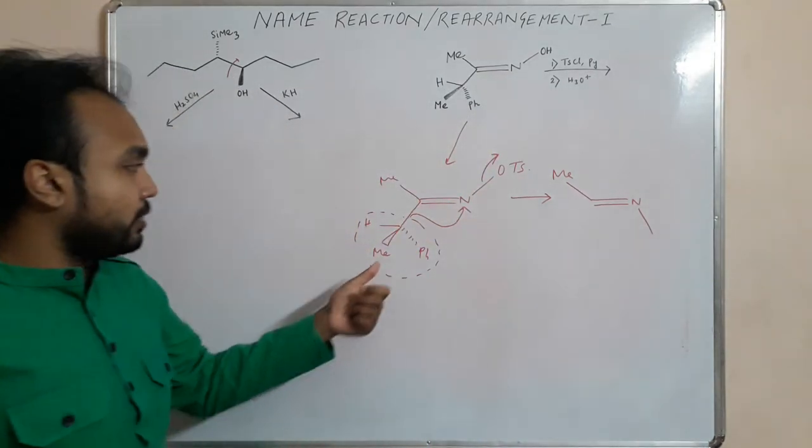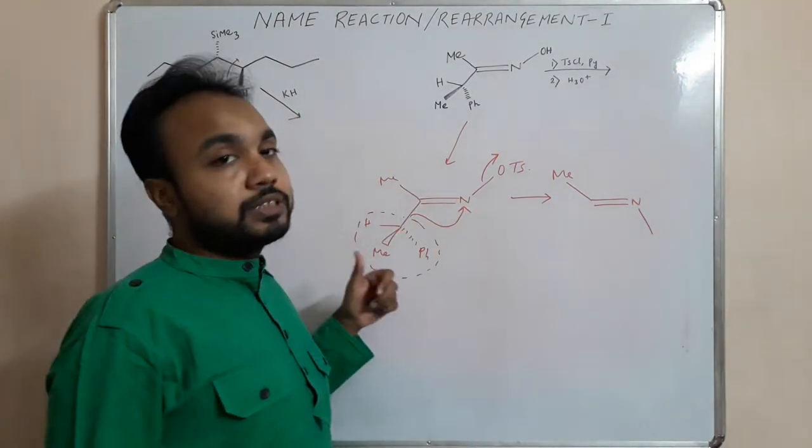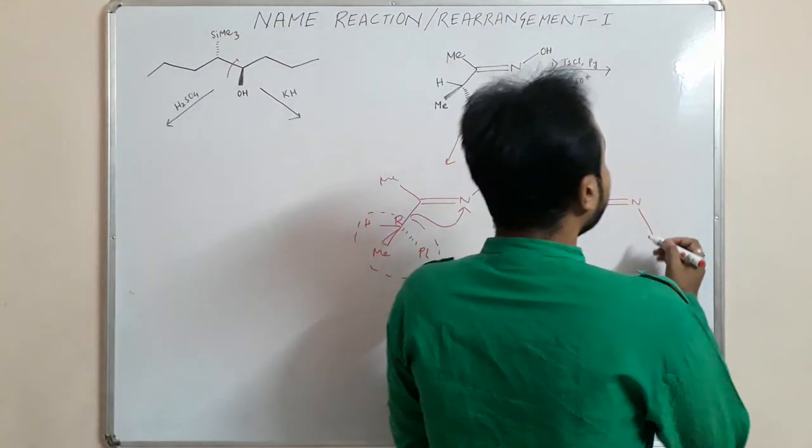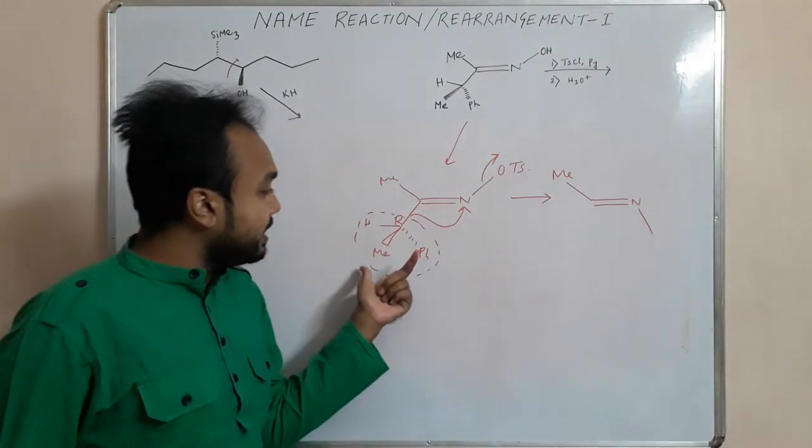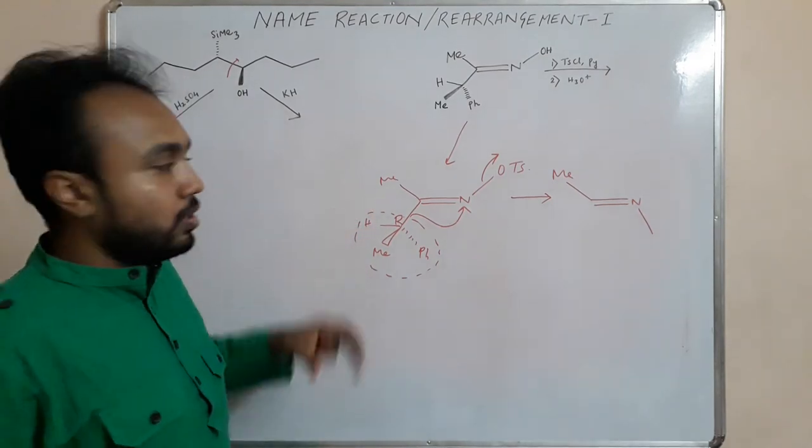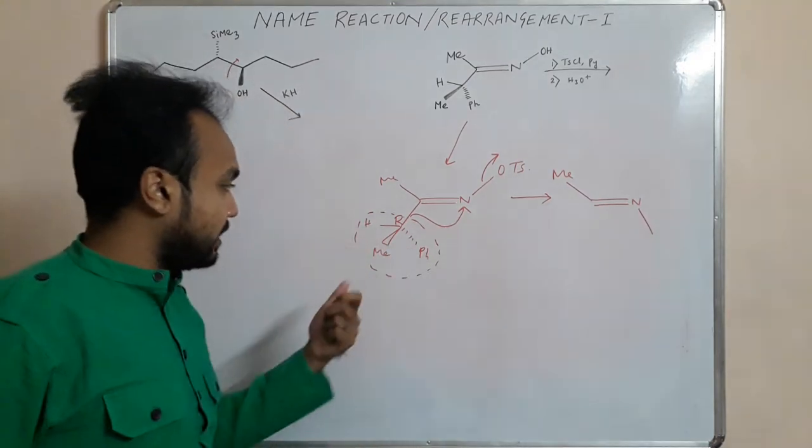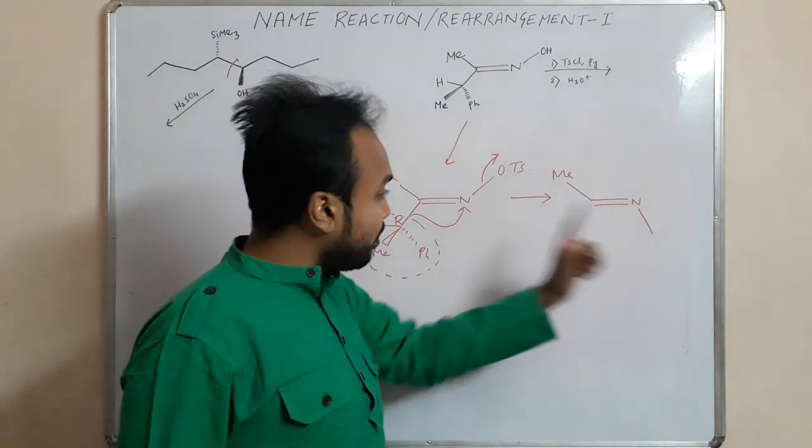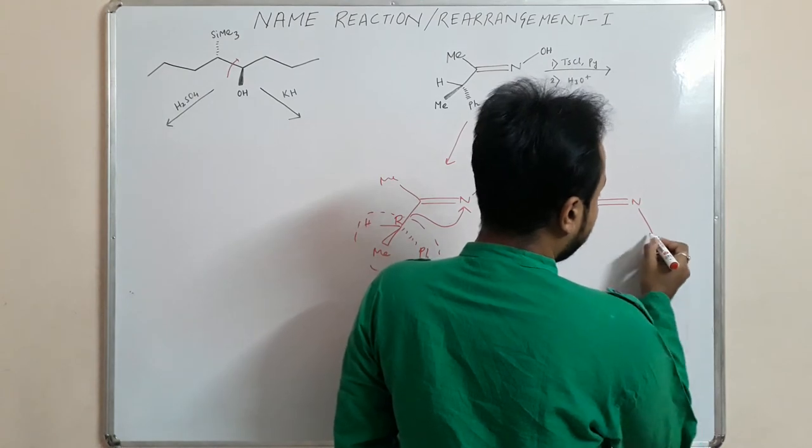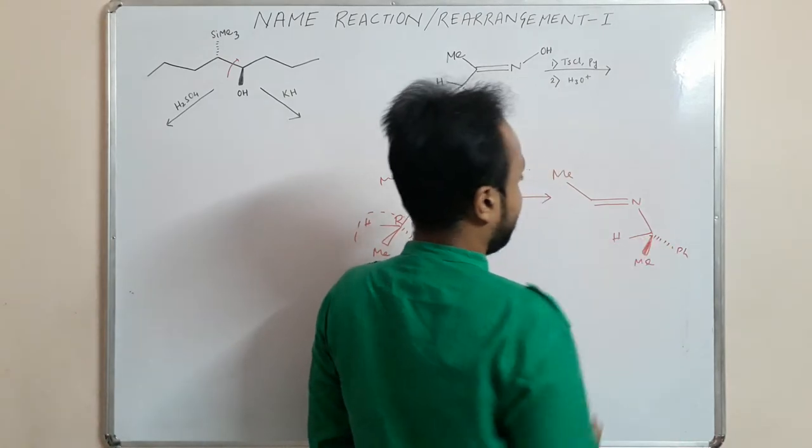Now think about the stereochemistry. For any rearrangement type reaction, there is a retention of configuration. If we start with an R isomer, we will end up with R isomer only. There will not be any change in the stereochemistry of this chiral center. Phenyl was in the backside, methyl in the front side, so that will be reflected in the product also. In the product, we will get phenyl at the backside, methyl at the top side and hydrogen.